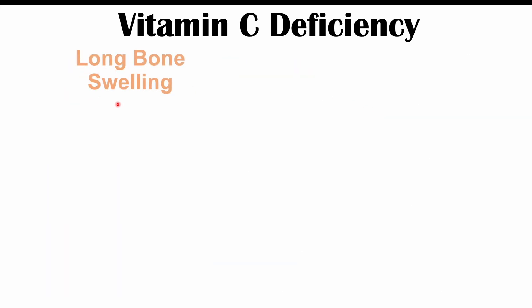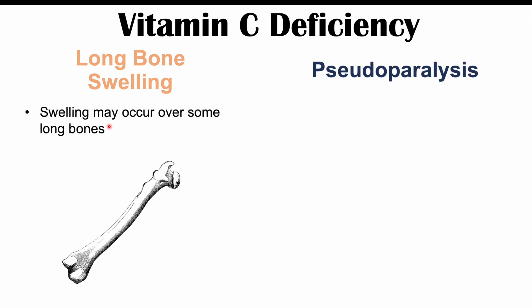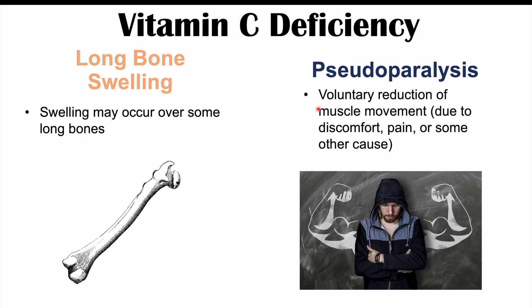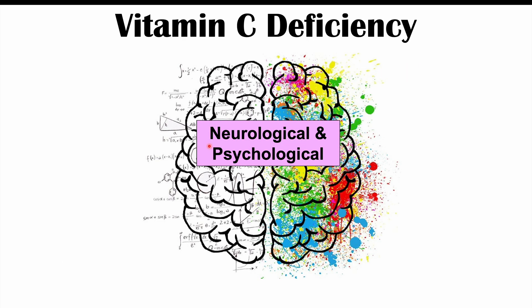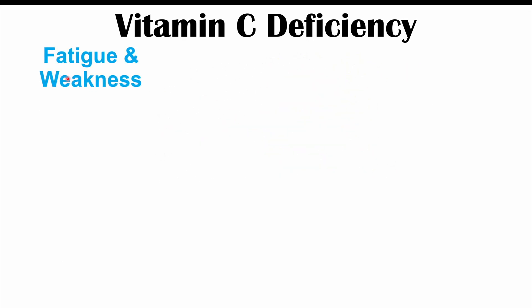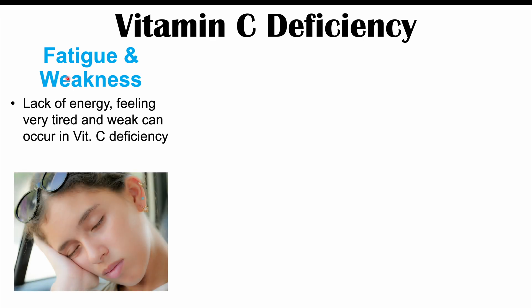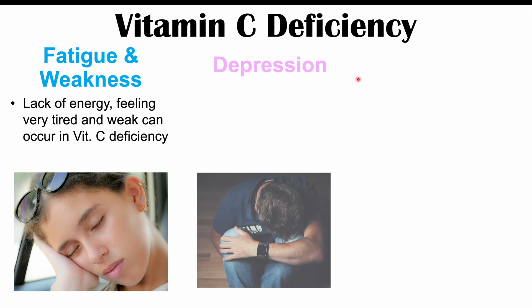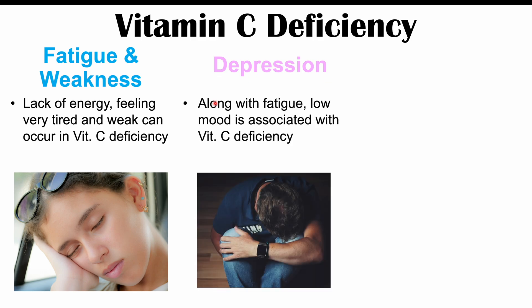We can also see issues with long bone swelling, occurring in more severe cases of scurvy. Swelling may occur over long bones such as the femur. We can also see pseudoparalysis — voluntary reduction of muscle movement due to discomfort, pain, or some other cause. It is not actual paralysis, but the patient is less likely to move because of discomfort. Neurological and psychological signs and symptoms include fatigue and weakness, and depression with low mood associated with vitamin C deficiency.